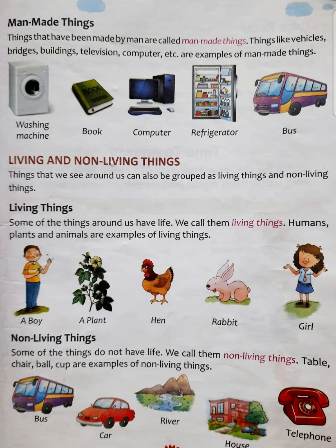See: washing machine, book, computer, refrigerator, bus — all these are also examples of man-made things. Yeh sabhi man-made things ke examples hain kyunki in sab ko insaan ne banaya hai, man ne banaya hai, isliye inhe hum man-made things kehte hain. In easy words, things that are made by man are called man-made things.